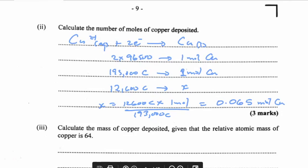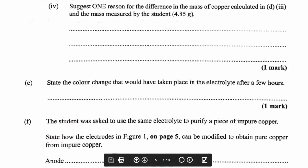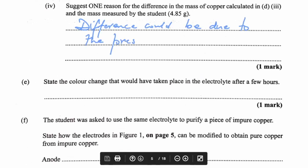With 0.065 moles of copper, we calculate the mass of copper deposited. The RAM of copper is 64, so mass of Cu = 0.065 moles × 64 g/mol = 4.16 grams. The difference between 4.16 grams calculated and 4.85 grams measured by the students could be due to the presence of impurities.